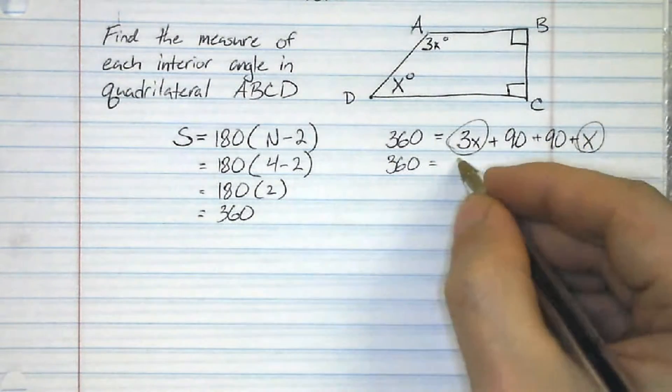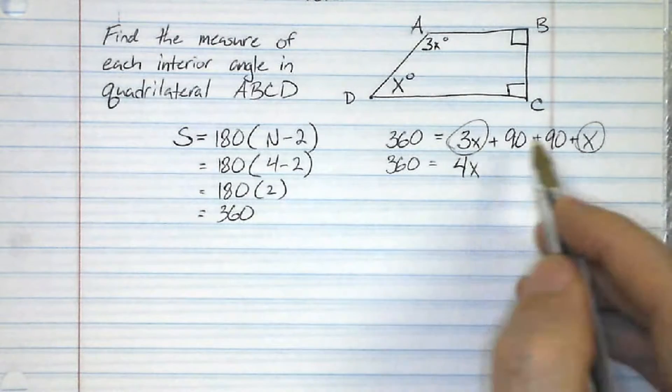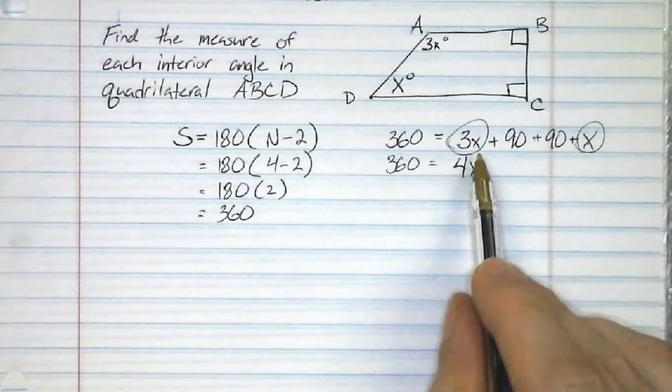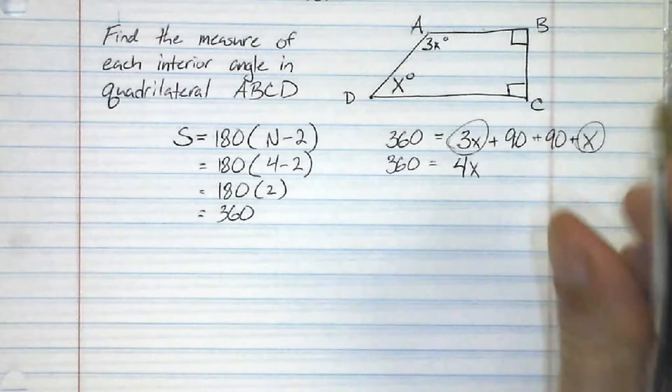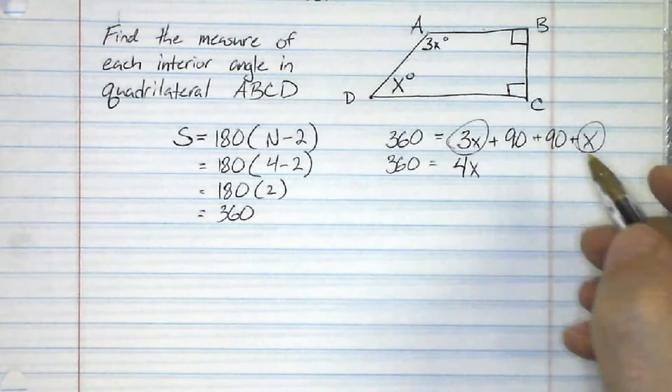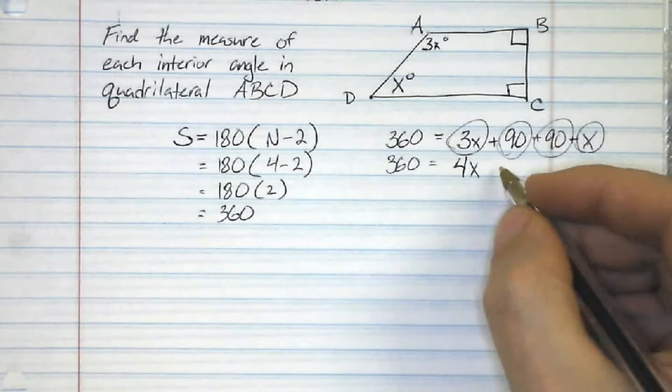So now we just combine like terms, three x's and one x, that's going to be 4x. Notice I circle them as I go along, that way I can know that I've used them and I don't count things twice. If you have something really complicated, that'll help you out. 90 and 90 is 180.